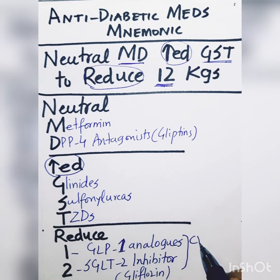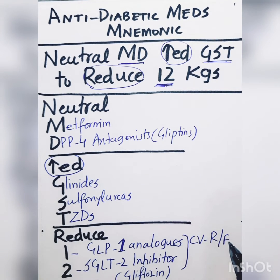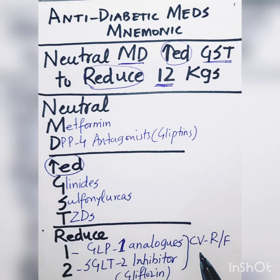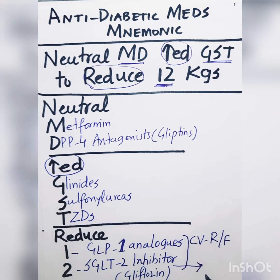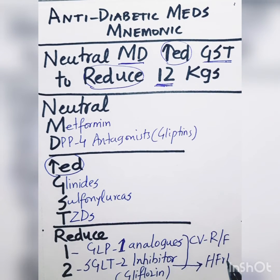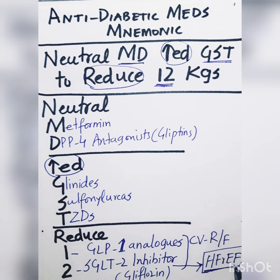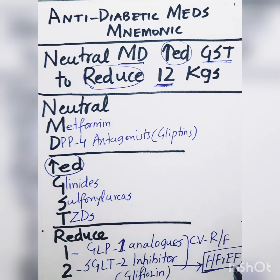If a patient has cardiovascular risk factors, it is safe to give both of these medications. What's special about SGLT-2 inhibitors is that they are also helpful in patients with cardiac failure, specifically heart failure with reduced ejection fraction. SGLT-2 inhibitors are the only anti-diabetic medication proven to improve survival in type 2 diabetic patients with heart failure.